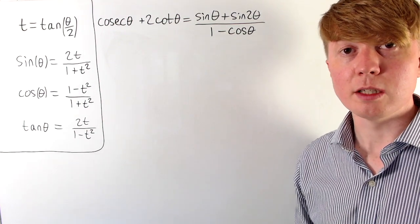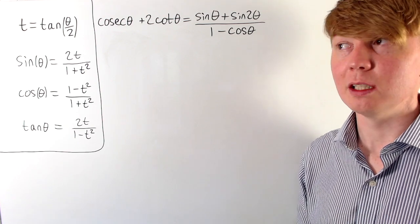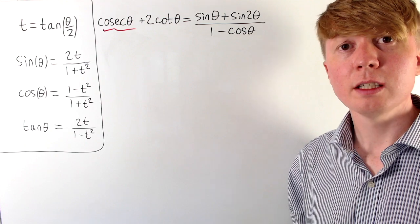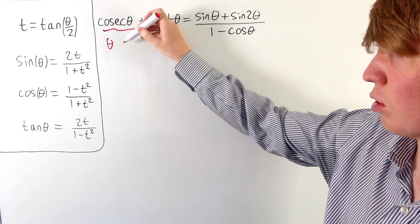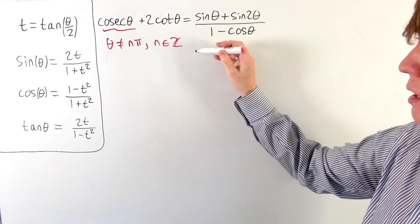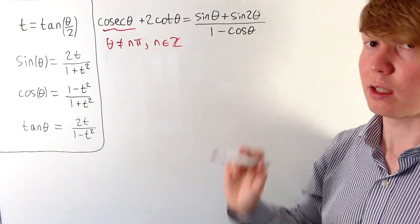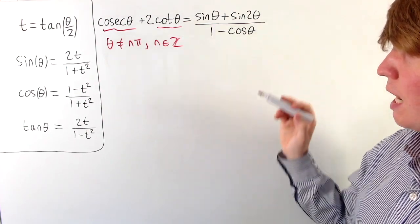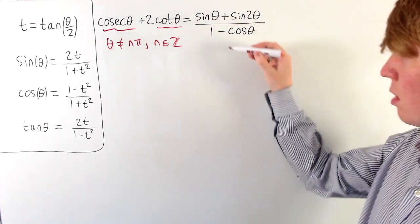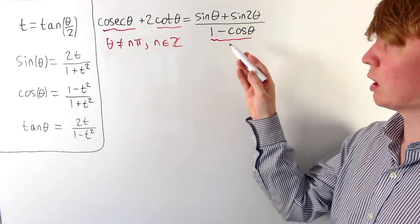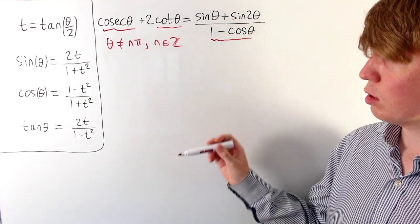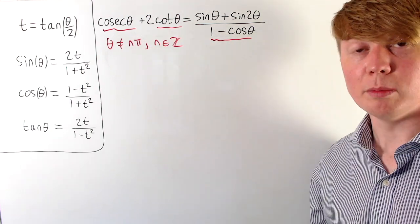Before applying the t-substitution, let's think carefully about where this equation is well defined. cosec(θ) = 1/sin(θ) isn't defined when sin(θ) = 0, ruling out any integer multiple of π. cot(θ) = 1/tan(θ) also isn't defined for integer multiples of π. We also need to consider the 1 − cos(θ) in the denominator: when cos(θ) = 1, that fraction isn't defined, ruling out even multiples of π. So overall, we just need to exclude integer multiples of π.